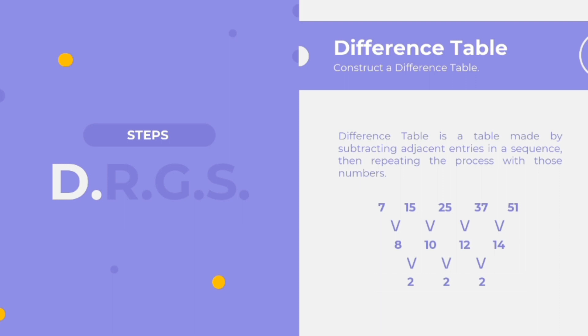To get the second set of differences, we have: 10 minus 8 equals 2, 12 minus 10 equals 2, and 14 minus 12 equals 2.